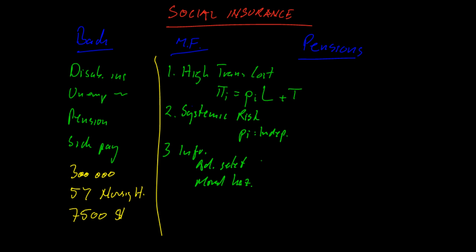The moral hazard problem is slightly different — once you have insurance, you will start to behave differently. This problem cannot be solved by government intervention. For example, if you become less careful once you have insurance, it doesn't matter whether it's private or government insurance. The insurance itself will make you behave worse, and that's a problem in both the private sector and under government intervention.